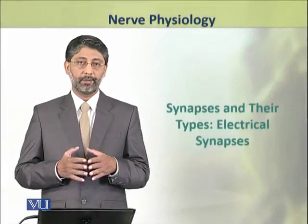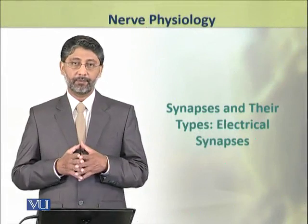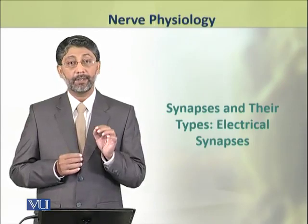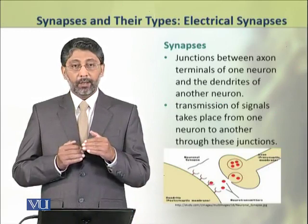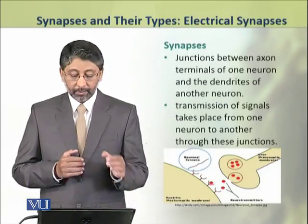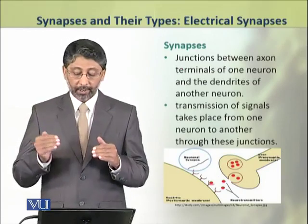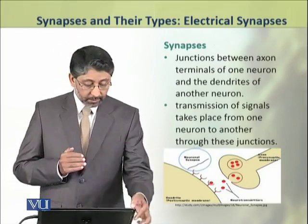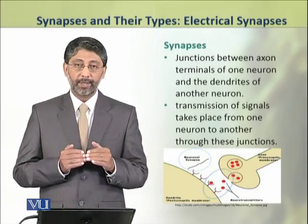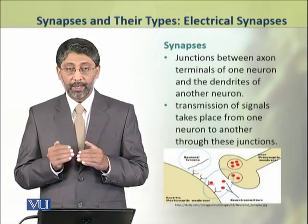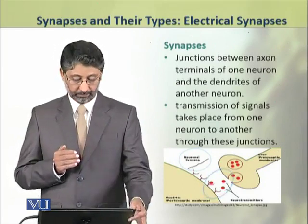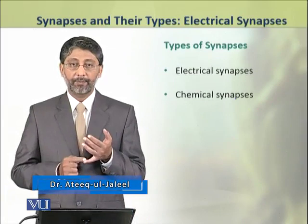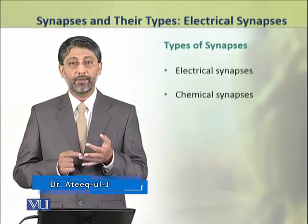Dear students, in this module we shall define synapses and discuss their types, and discuss one type — electrical synapses — in detail. The synapses are the junctions between axon terminals of one neuron and the dendrites of another neuron. The transmission of signals takes place from one neuron to the other through these junctions. There are two types of synapses: electrical synapses and chemical synapses.